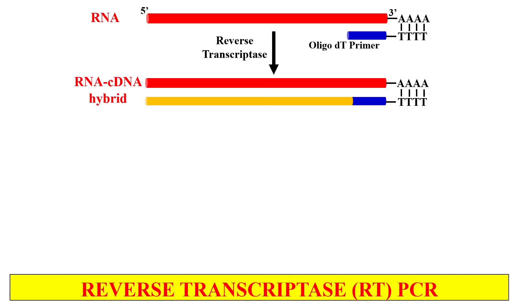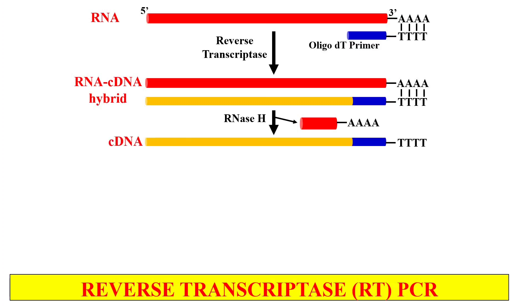As you can clearly see, now we have this hybrid. The next step will be to remove the RNA molecule. For that, we will use the enzyme RNase H, and it will specifically degrade the RNA from this hybrid. Now we are only left with the complementary DNA, that is cDNA.